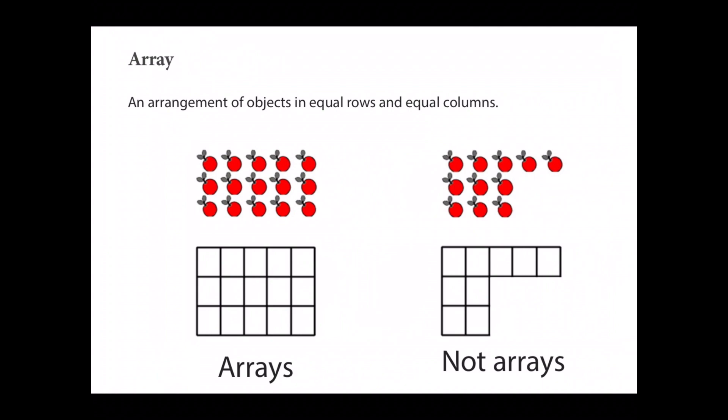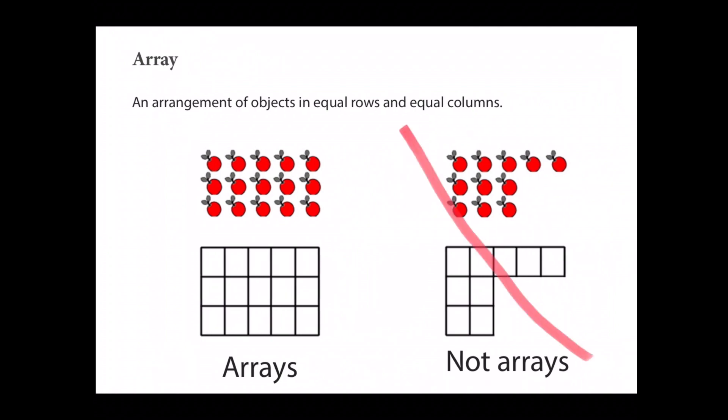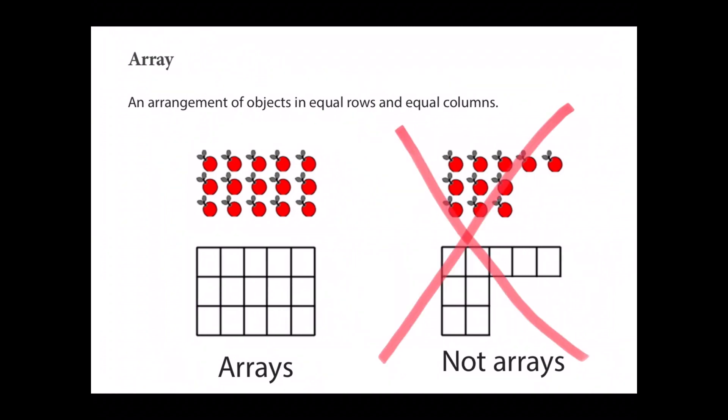What is an array? An array is an arrangement of objects in equal rows and equal columns. You can see the apples on the left show three rows of five, or five columns of three — that's an array. On the right, they are not arrays because there is not an equal amount in each row or column. The image on the right shows a row of five and then two rows of three, so it is not an array.